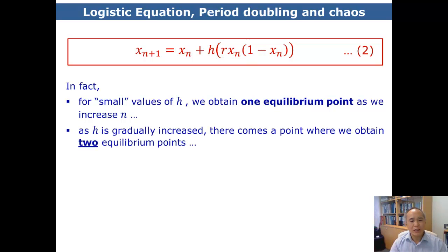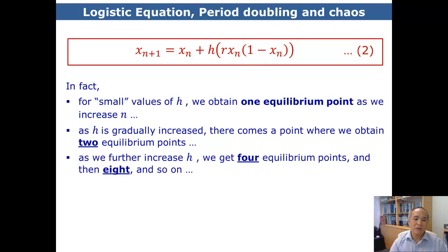However, as h is gradually increased, there will come a point where we obtain two equilibrium points. That is, with increase in n, we will end up with two different values of x. Now, if h is further increased, we can get four equilibrium points and subsequently eight and so on.